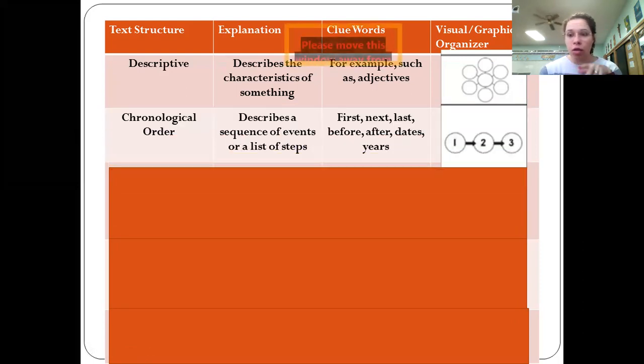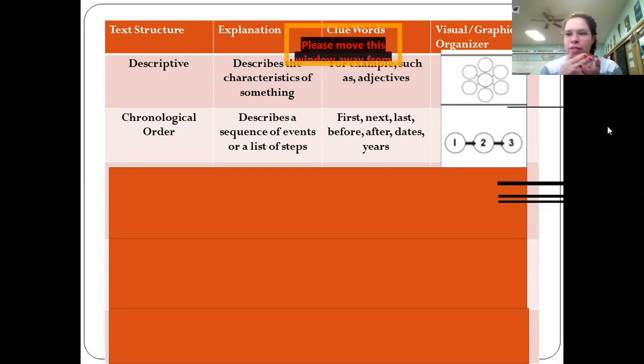The next one is chronological order. This one is the sequence of events in the order that they happened. Keywords are first, next, last, before, after, dates, years. For example, we're going to be talking about the gold rush. We're going to learn about some of this in chronological order, the order that it happened in the gold rush. This graphic organizer where it's just one, two, three, the order that it happened makes perfect sense.